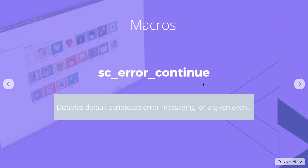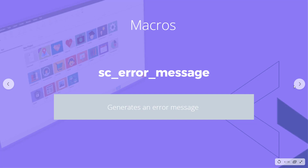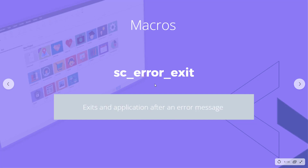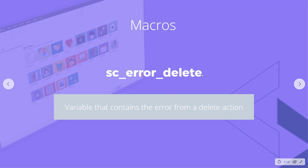The first macro is sc_error_continue, which disables default Scriptcase error messaging — so any default messaging that comes from the database. This lets us substitute our own messages. The next one is sc_error_message, so we can send a custom error message that looks nicer to users. And lastly, there's a macro that exits an application after an error message.